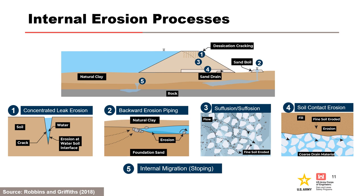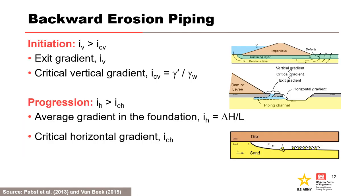Direct use of critical velocities or gradients determined from laboratory experiments is limited by the narrow range of materials tested and an apparent significant scale effect. For backward erosion piping, initiation is governed by Terzaghi's classical equation for critical vertical gradient, whereas the average gradient informs the hydraulic condition for progression.